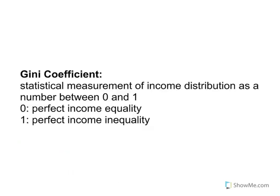If you're looking for a numerical way to express income inequality, we can use something called the Gini coefficient — a statistical measurement of income distribution as a number between zero and one. If the number is zero, that means we have perfect income equality, meaning we are on that linear line of perfect income equality on the Lorenz curve graph. If the number is one, that means we have perfect income inequality, where the smallest possible number of people control the vast majority of the wealth. The closer to zero, the more income equality; the closer to one, the more inequality.